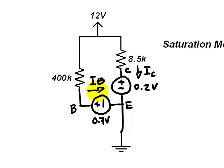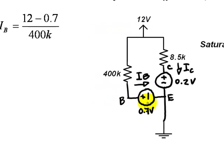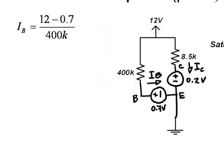Of course, the base current will not change. It's still going to be 12 minus 0.7 over 400 kilohertz, 28 microamps. However, the transistor is not amplifying that current anymore.